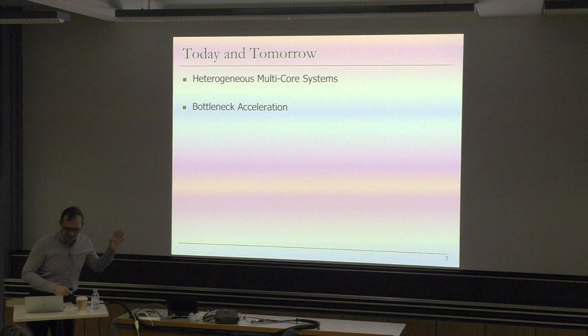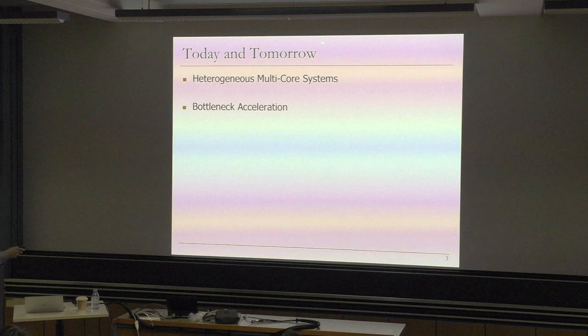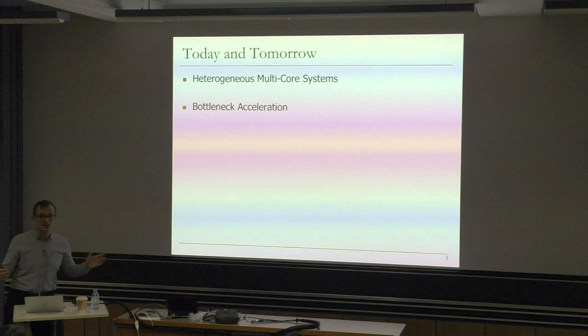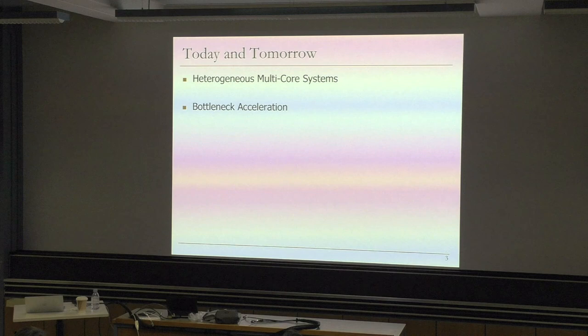With that said, we're going to talk about this today and tomorrow. We're going to talk about heterogeneous multicore systems and, more generally, bottleneck acceleration, which is not limited to heterogeneous multicore systems. But if you have heterogeneity, your bottlenecks can be accelerated much better, as we will see. Because if you have homogeneity, you have only one choice - if all of your resources are homogeneous, you don't really know what to do with a bottleneck.